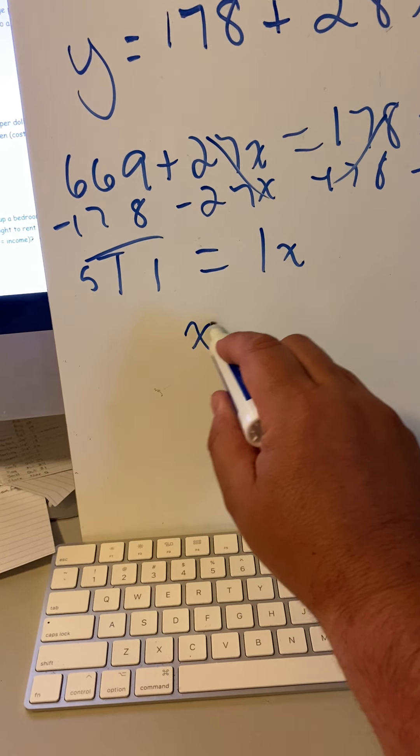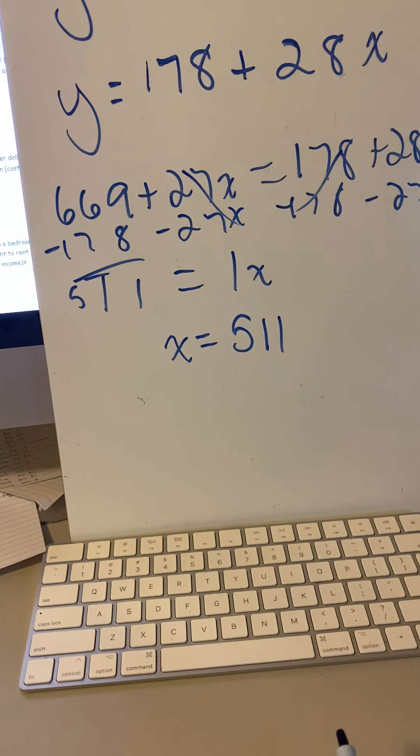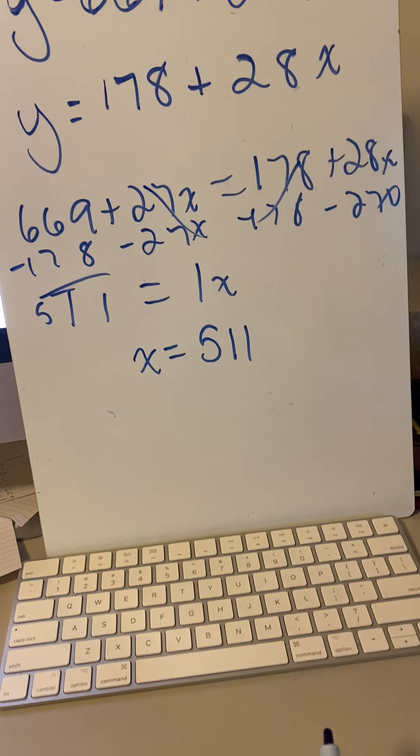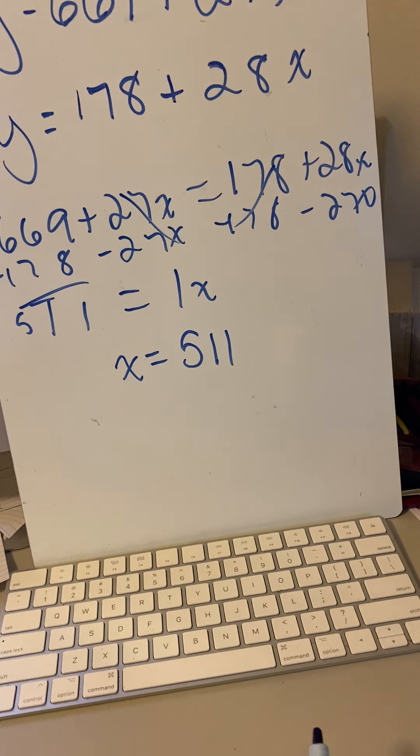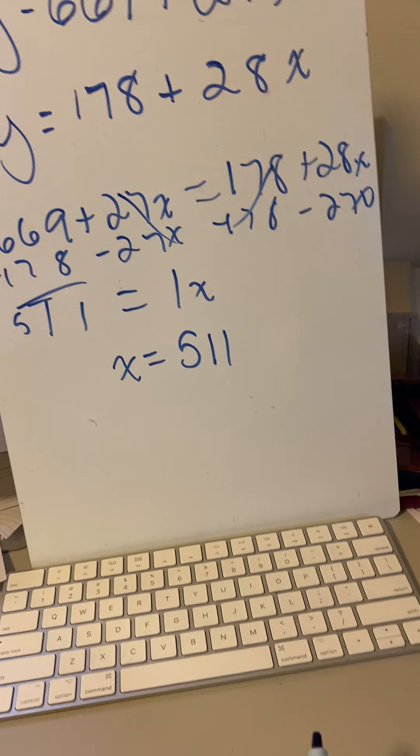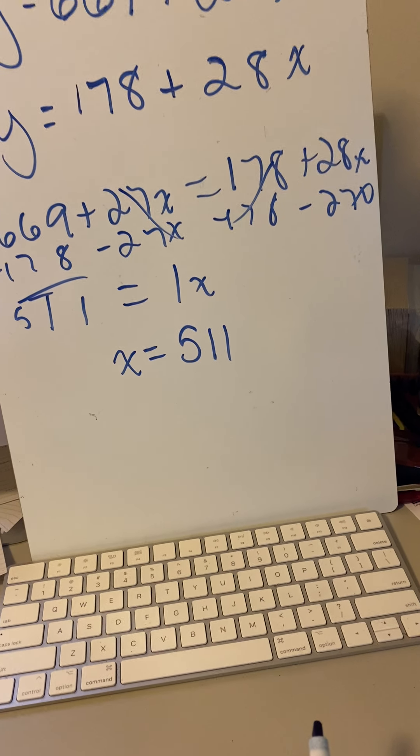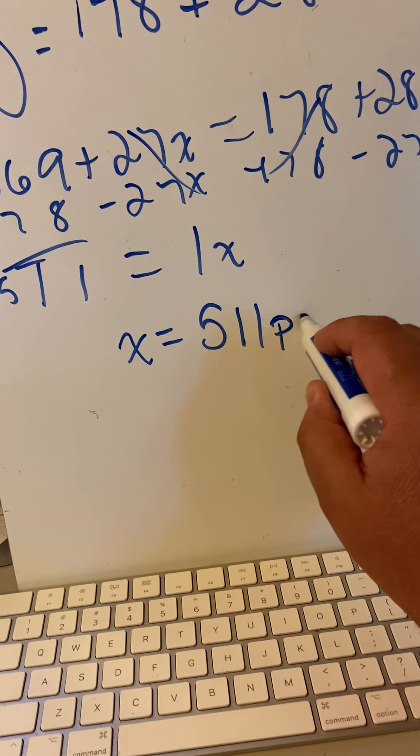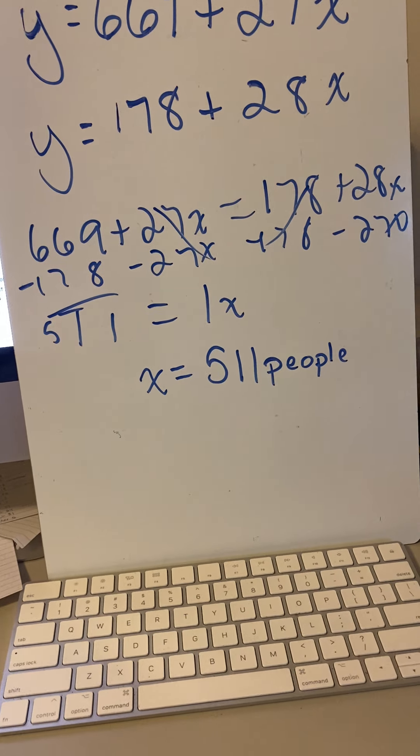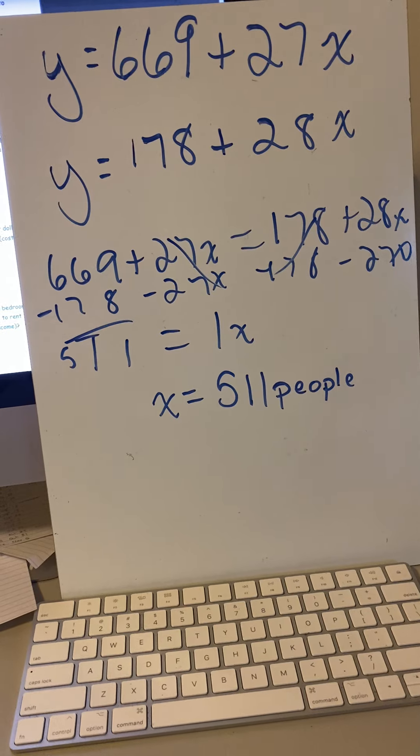X is going to equal 511, which is a huge number. So 511 is what X is - that's how many people would have to come to your party so that these two break even. Holy cats! If you ever have a party that has 511 people, I better be one of the 511 invited to it. That is the number of people you'd have to invite.